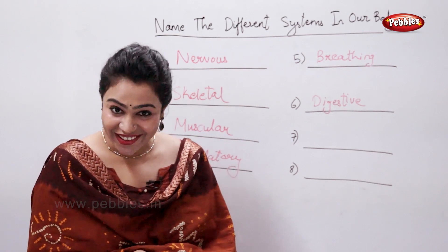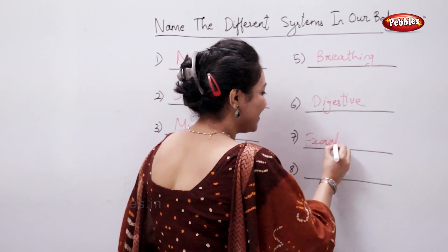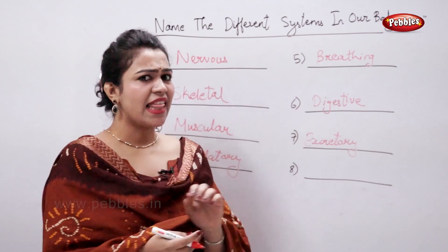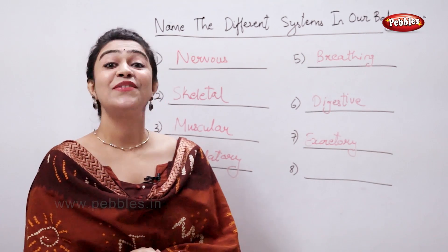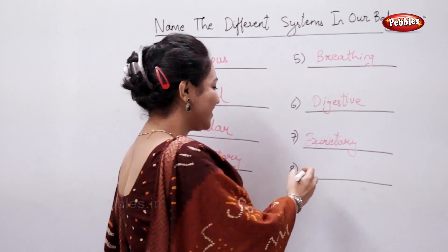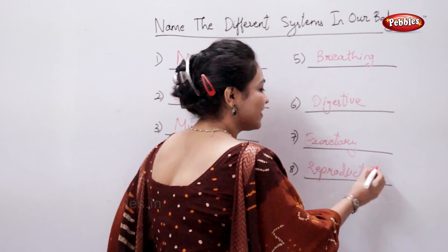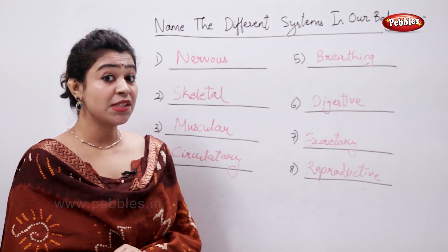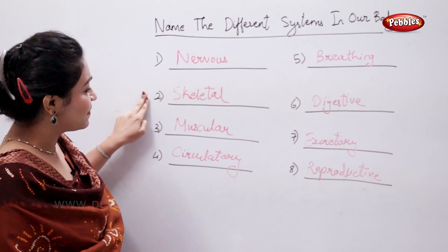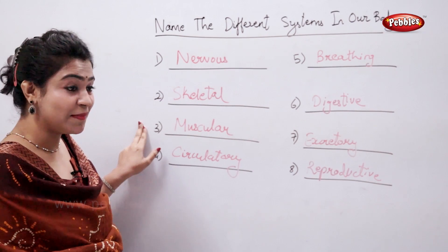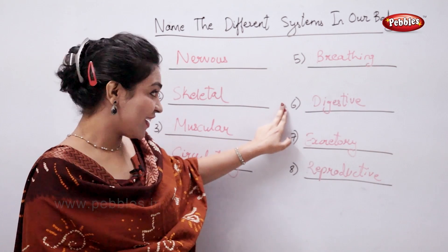And excretory system — perfect! And the last one: yes, reproductive system. So the different systems in our body are nervous system, skeletal system, muscular system, circulatory system, breathing system, digestive system, excretory system, and reproductive system.